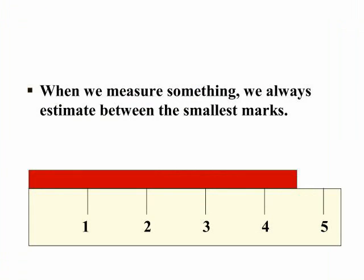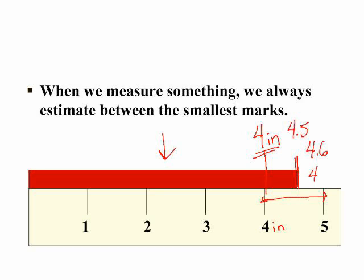When we measure something, we always measure to what the instrument can read and then make an estimate. So let's say these are inches — this object would be at least four inches; that's the known part of the measurement. Then there's a part we need to estimate. We know it's between four and five, so most people would probably say four point five, although you might say four point six or even four point four. This last number is the estimated digit.